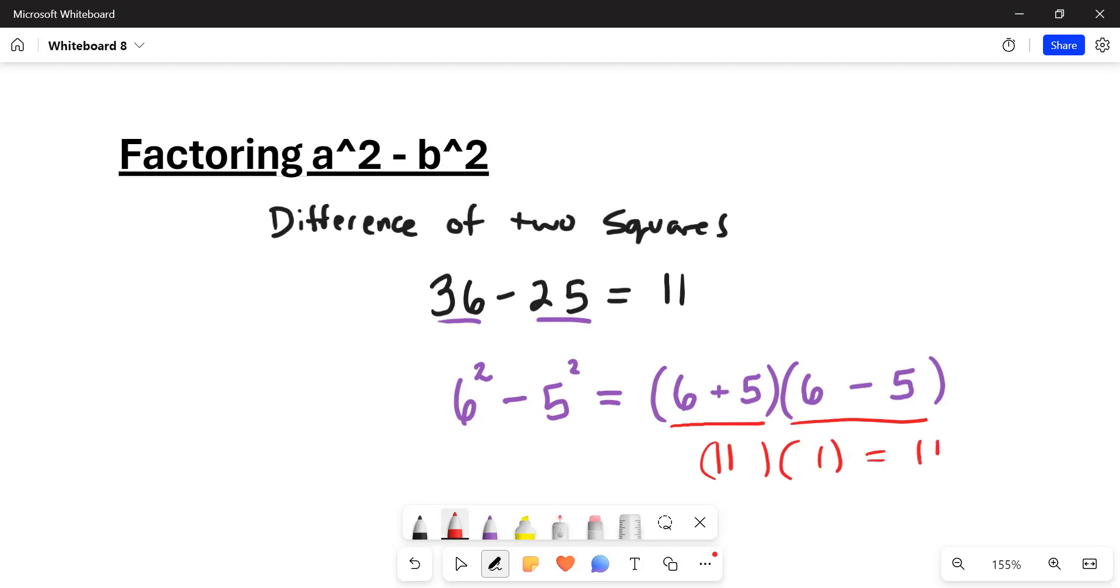Now, where did that come from? Where does this just arise? And there is a reason for it. It comes from the distributive property. If we multiply this out, 6 times 6, that's the 36 right there. If you do 6 times negative 5 and then turn around and do 5 times 6, those are opposites. They cancel out. And then lastly, 5 times negative 5 is the second one.